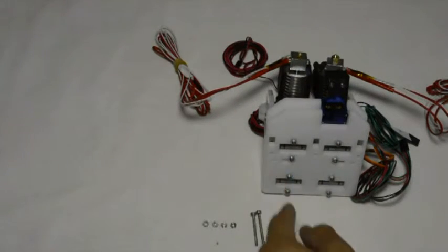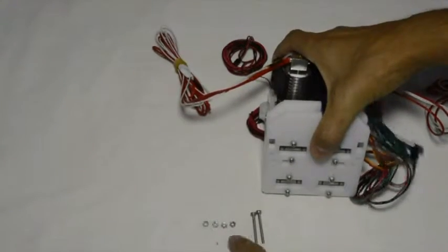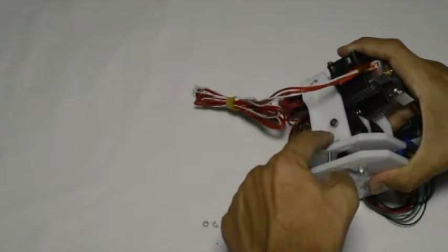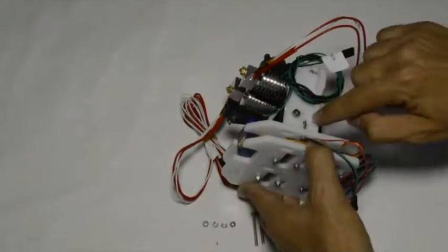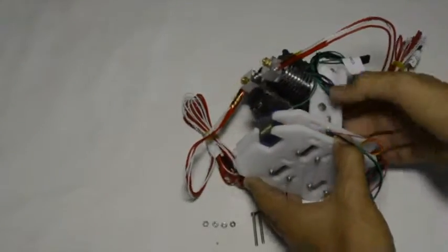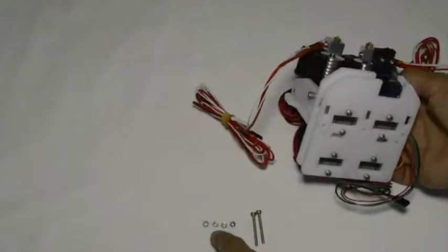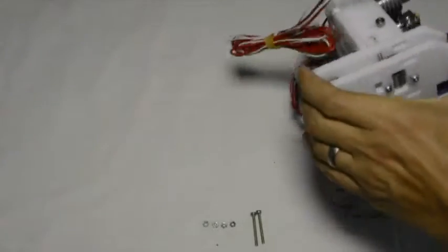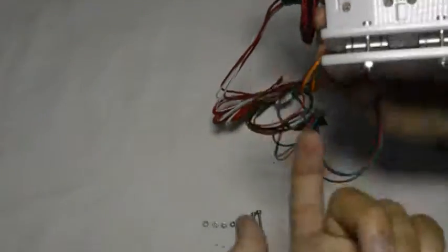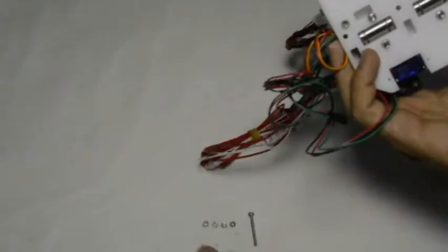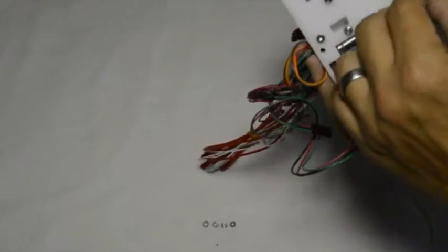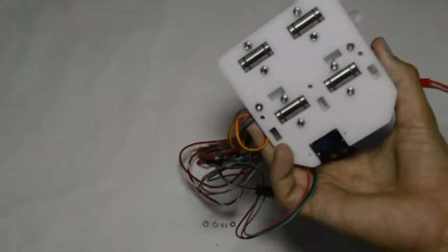So then the next step will be to take two of the M3 nuts and slot them into the slots provided, that one and that one, and use the two screws that's already in place. And the last two screws are for the M3 by 30 screws. And the nuts will go there and the screws will run into that hole. And that hole runs right through the whole assembly.